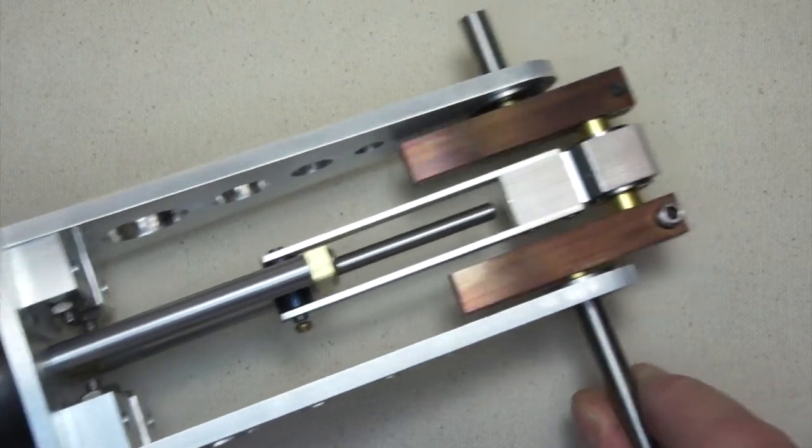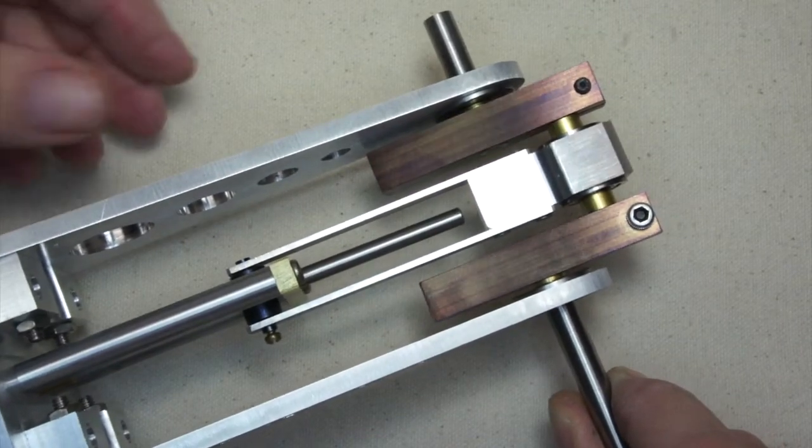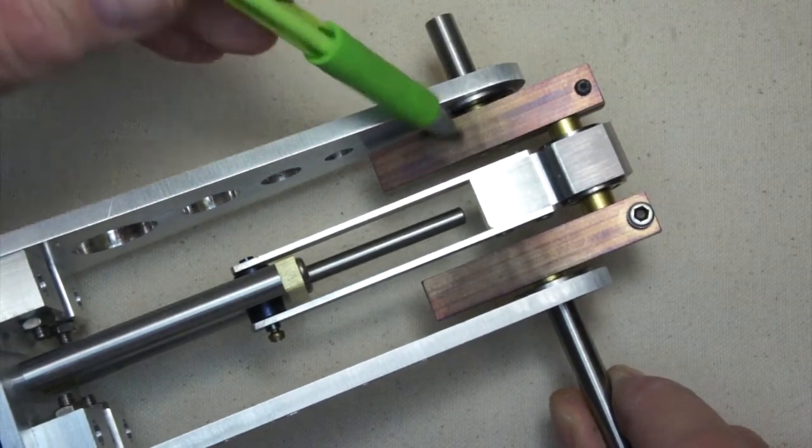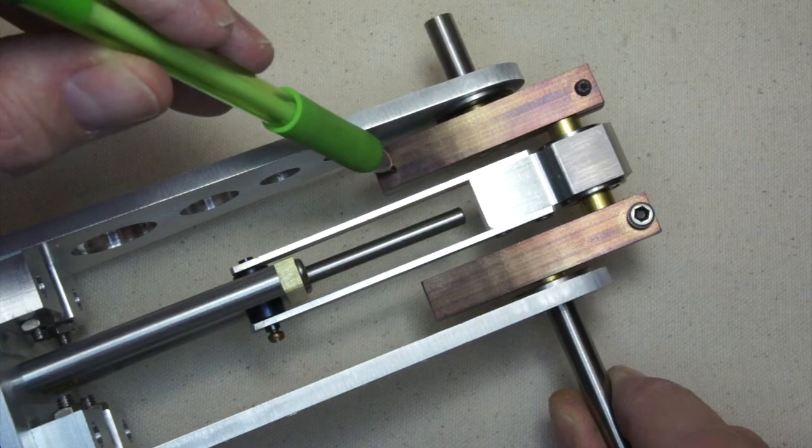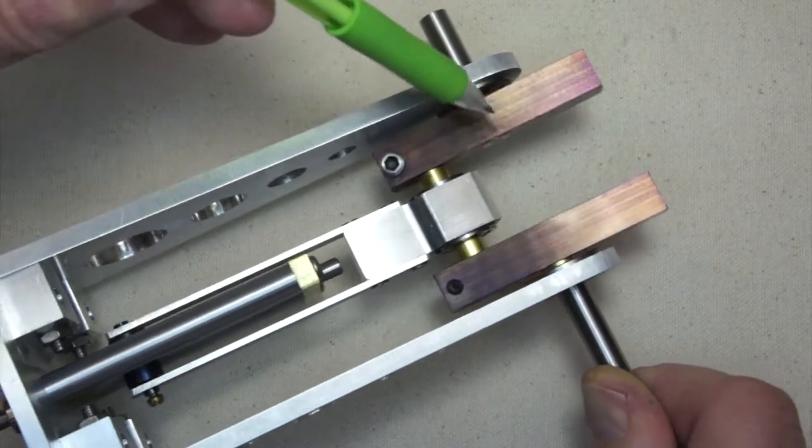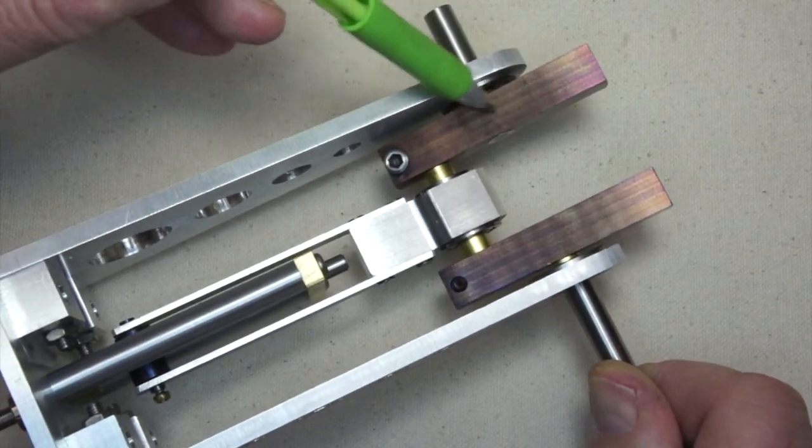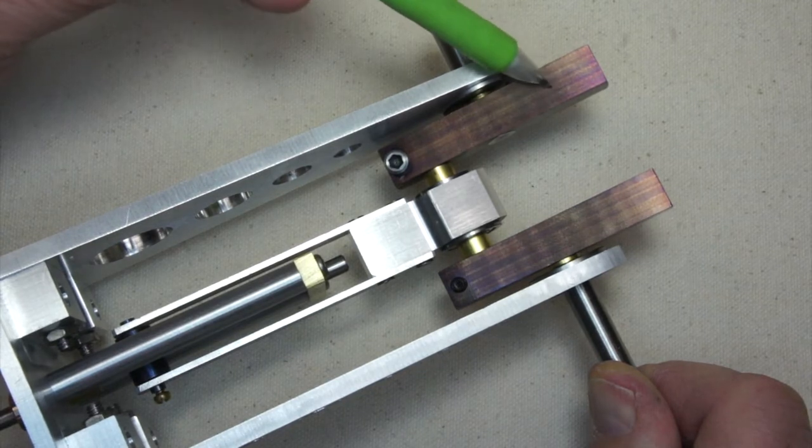Another point that is worth making here is that we've purposely made the crankshaft webs long. This section on the non-working side, if you will, of the crank web.